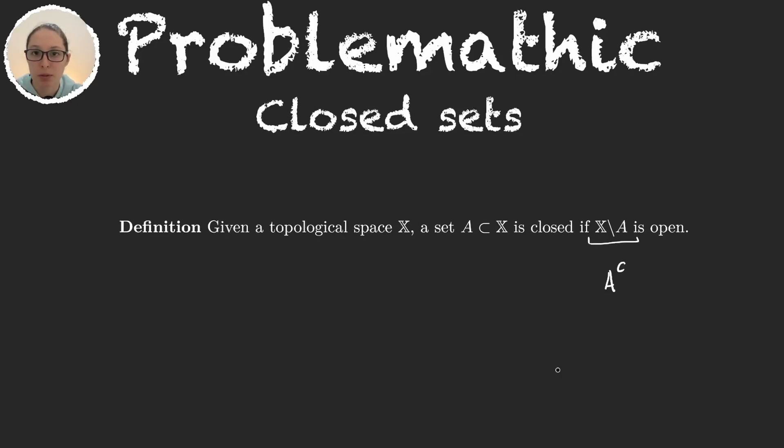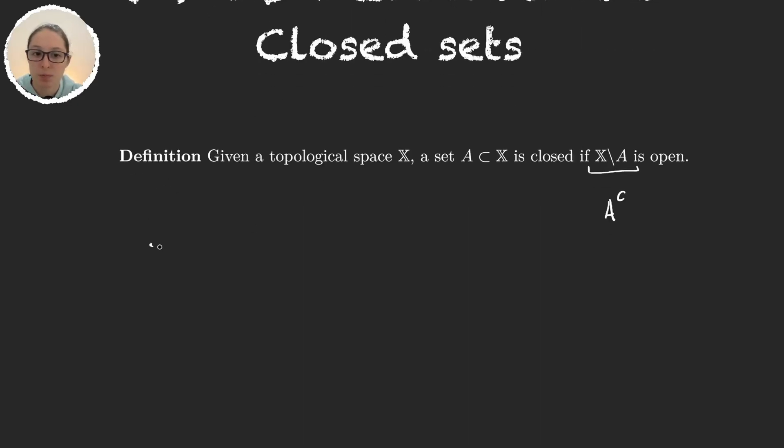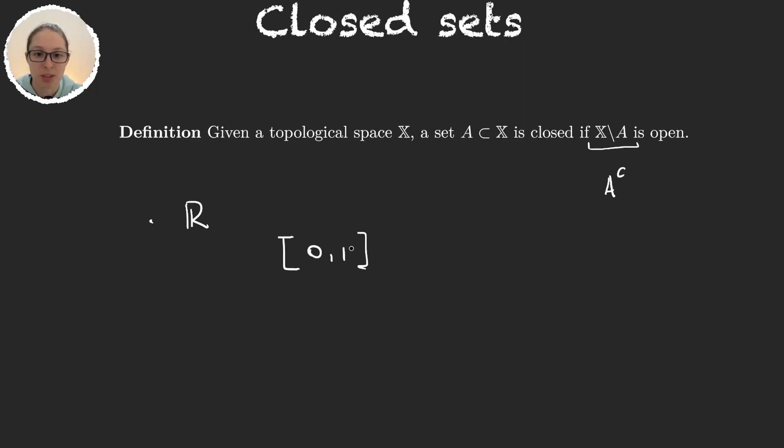So let's start with a very simple example. We have the real line with the standard topology and we just consider for example the set [0,1]. You can probably already imagine what this set is because it's called the closed set so it doesn't actually leave us with a lot of options. So to prove that this set is closed we would have to see that the real numbers minus [0,1] is open.